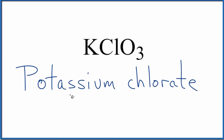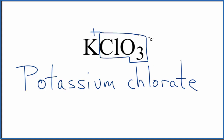If you were given the name potassium chlorate, you'd need to be able to look up chlorate, know what chlorate is, or memorize it. So you'd have your ClO₃, and then potassium — that's K. Since potassium is in group one, that's one plus. The whole chlorate ion is always one minus. So they balance out — that's why we have KClO₃.